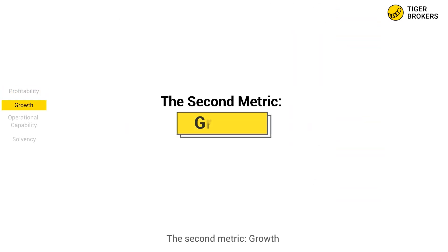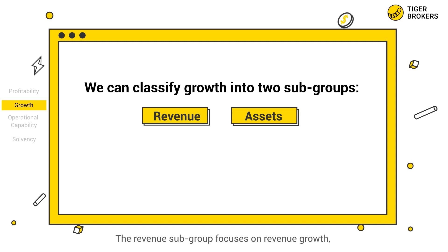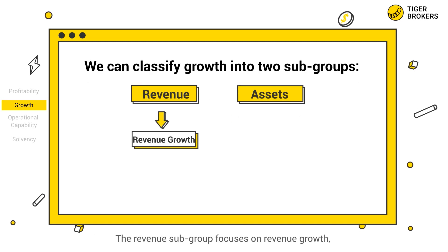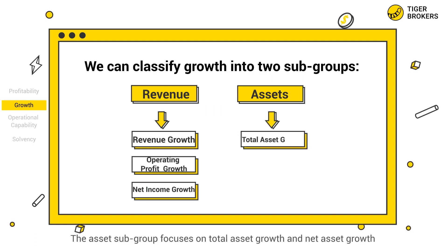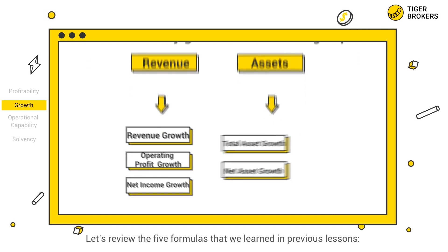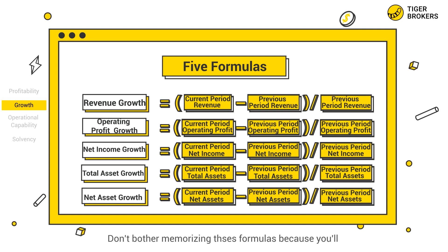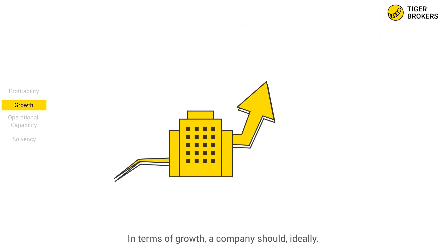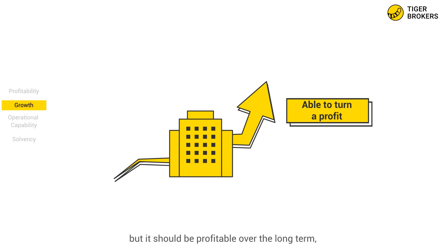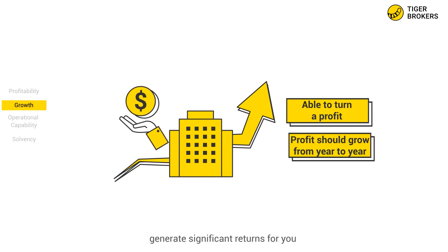The second metric: growth. We can classify growth into two subgroups — revenue and assets. The revenue subgroup focuses on revenue growth, operating profit growth, and net income growth. The asset subgroup focuses on total asset growth and net asset growth. Don't bother memorizing these formulas because you'll find them readily available in the TigerTrade app. In terms of growth, a company should ideally not only be able to turn a profit, but it should be profitable over the long term, and that profit should grow from year to year. These are the kinds of companies that will generate significant returns for you.